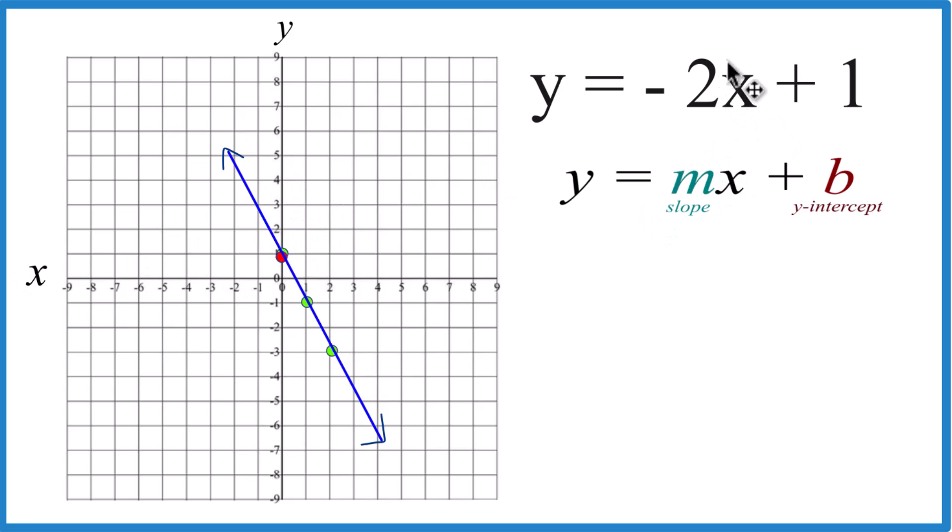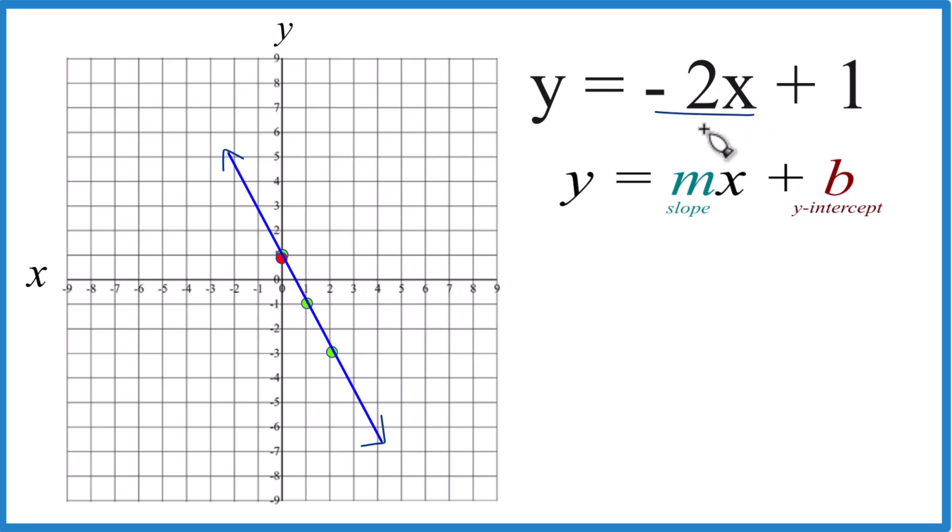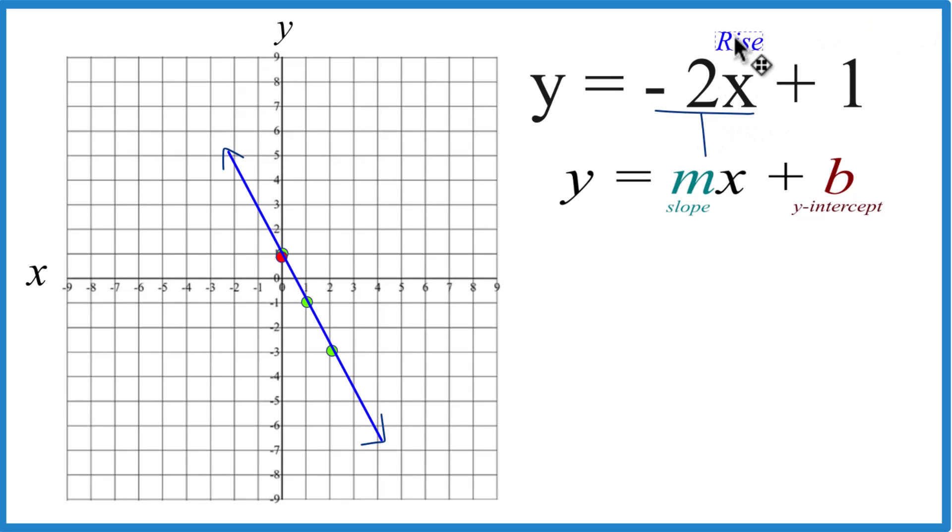Now for the slope, let's call this negative two over one. It's still the same thing. It's still negative two. But now we can call this rise over run. So we can go to our y-intercept here, and we would rise two, and then run one, except we have that negative there.